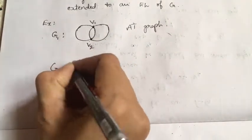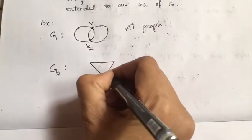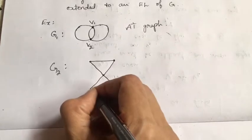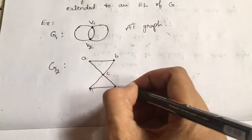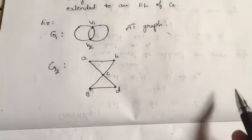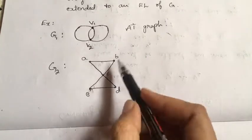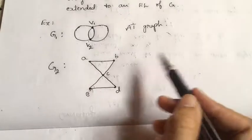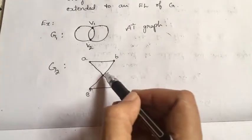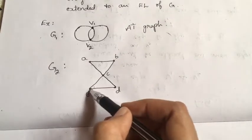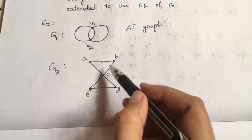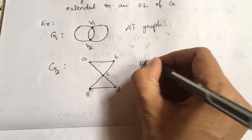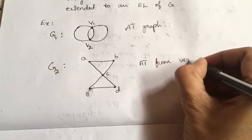For one more example, consider a graph made of two triangles with vertices A, B, C, D, and E. From vertex C I can get an Euler line: C → A → B → C → E → D → C. So it is arbitrarily traceable from C. But if I consider starting from A, B, E, or D, then it is not arbitrarily traceable from those vertices.